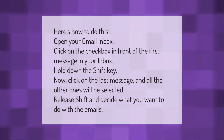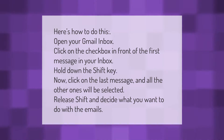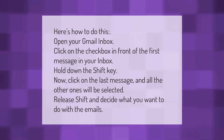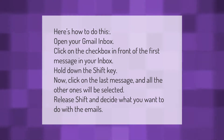Here's how to do this: open your Gmail inbox and click on the checkbox in front of the first message. Hold down the Shift key, then click on the last message and all the other ones will be selected. Release Shift and decide what you want to do with the emails.